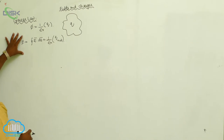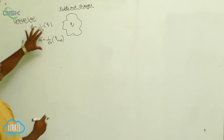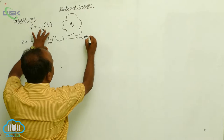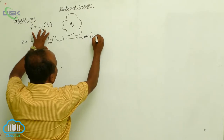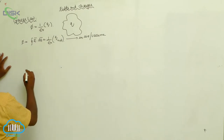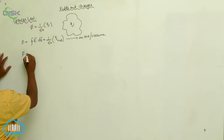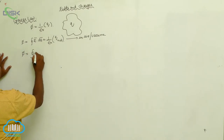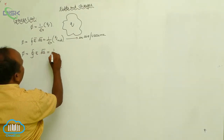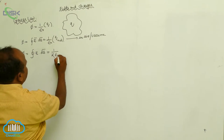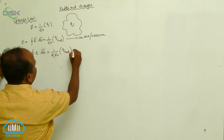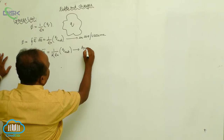This equation is valid in air or vacuum. In any dielectric medium, phi equals the closed integral of E dot dS equals 1 by k times epsilon-not times Q_net.